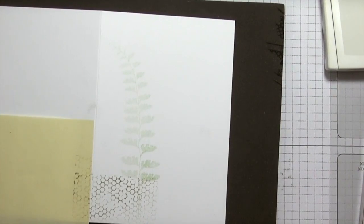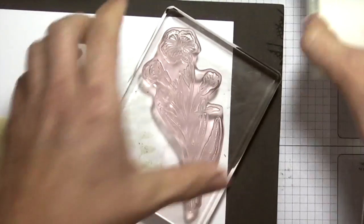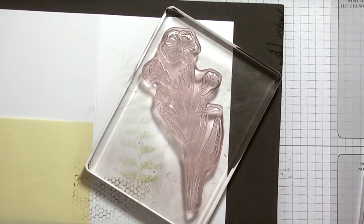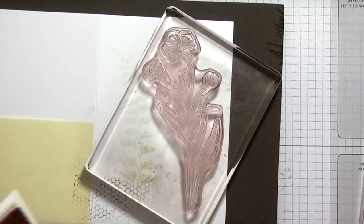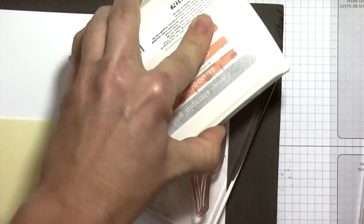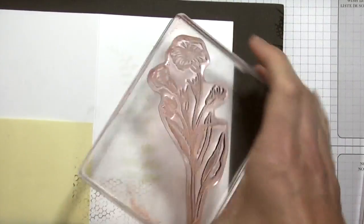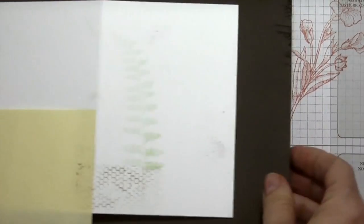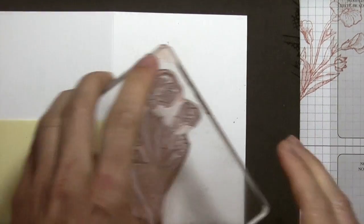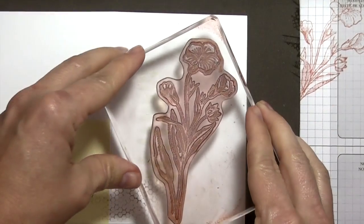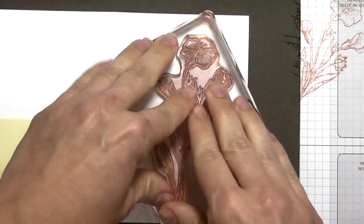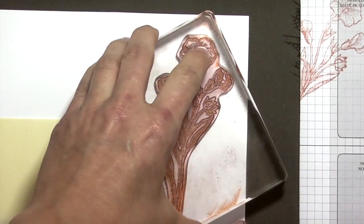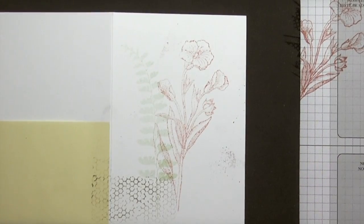Next, we're going to do the large flower, and this is going to be in crisp cantaloupe. Let's try that. I'm going to stamp off again and then just stamp right there.